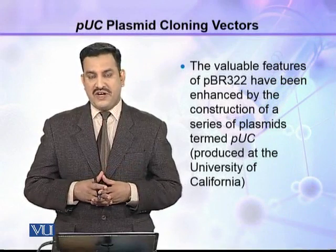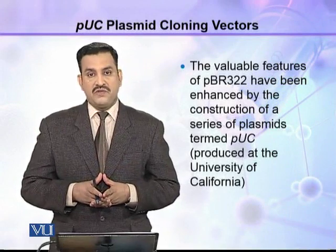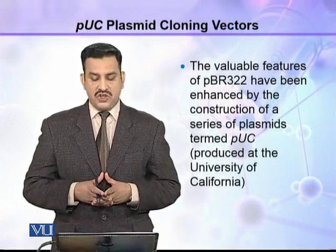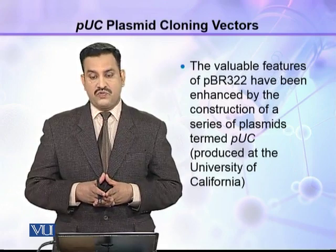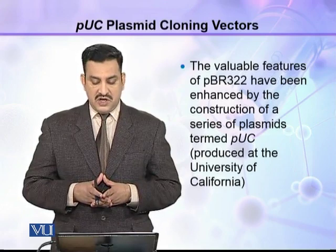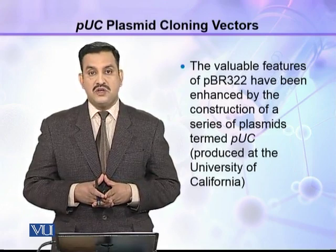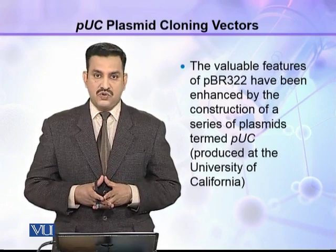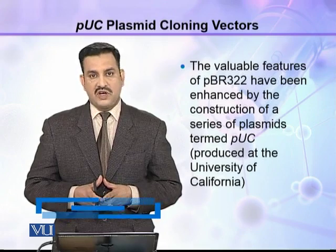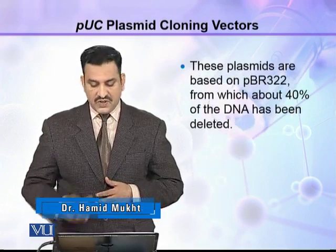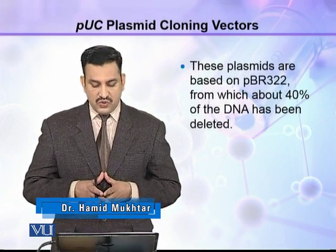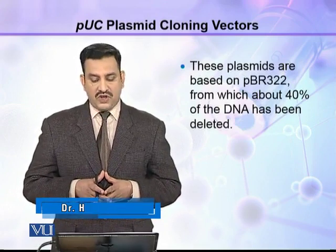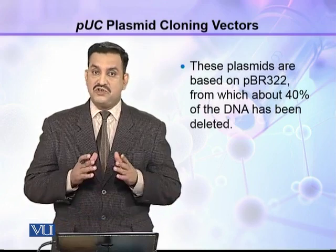PUC plasmid is another important cloning vector. The valuable features of PBR322 have been enhanced by the construction of a series of plasmids termed as PUC, because they are produced at the University of California. These plasmids are based on PBR322, from which about 40 percent of the DNA has been deleted.